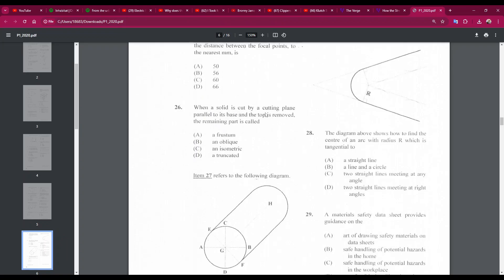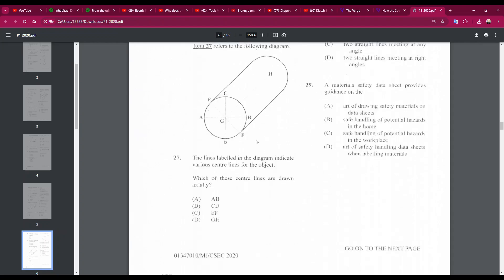When a solid is cut by a cutting plane parallel to its base and the top is removed, the remaining part is called a frustum. It's a frustum if the cut is parallel. If the cut is not parallel, then it is truncated. So the answer is A, a frustum. Number 27: the lines labeled in the diagram indicate various center lines for the object. Which of these lines are drawn axially? The answer is D, GH. It runs along the length of the cylinder. It's the axial center line. So number 27D.